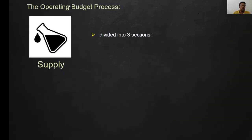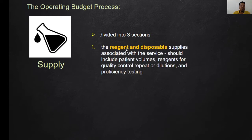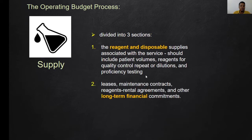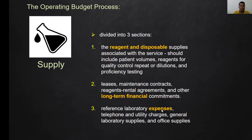Second is the supply budget, divided into three sections. First, reagents and disposables — should include patient volumes, reagents for quality control, repeats or dilutions, and proficiency testing. Second, long-term financial commitments such as leases, maintenance contracts, and reagent rental agreements. Third, other expenses including telephone, utility charges, general laboratory supplies, and office supplies.